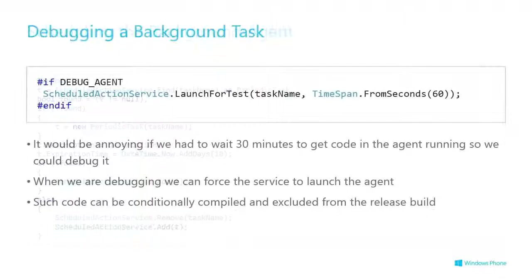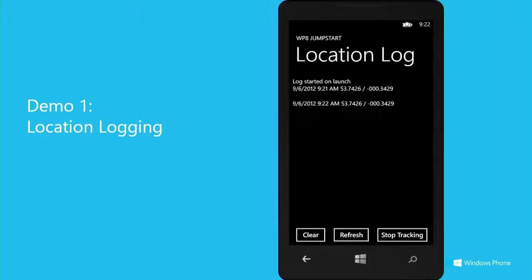So let's see how we can debug this. You don't want to wait for 30 minutes. There's a little conditional in a TimeSpan — when you're debugging, it actually allows you to do something like every 60 seconds where you can pop that up over and over again. The LaunchForTest method is a special just-for-development method so you can kick the thing off and not have to wait.